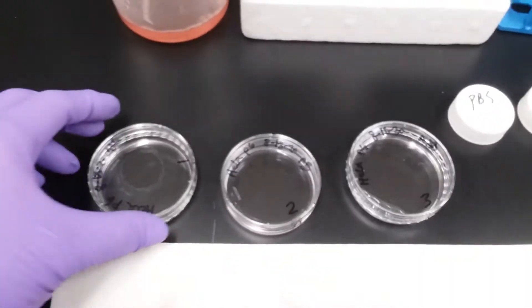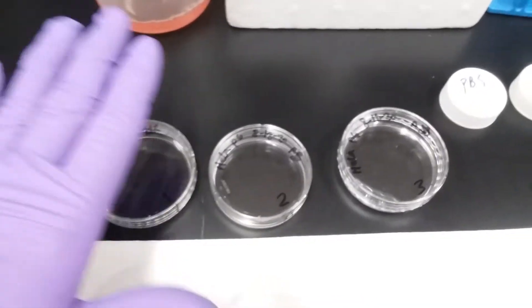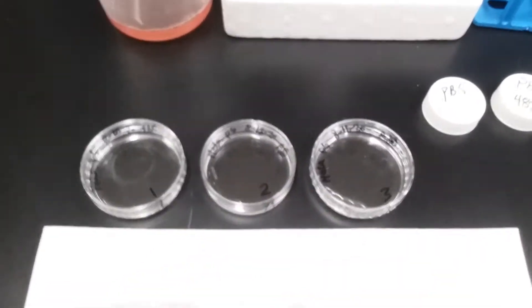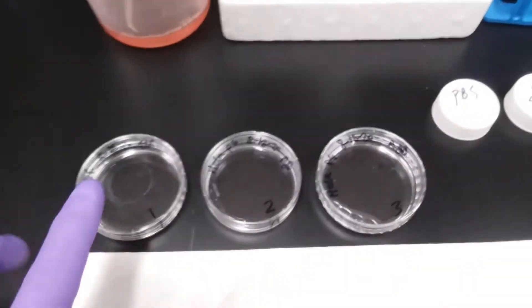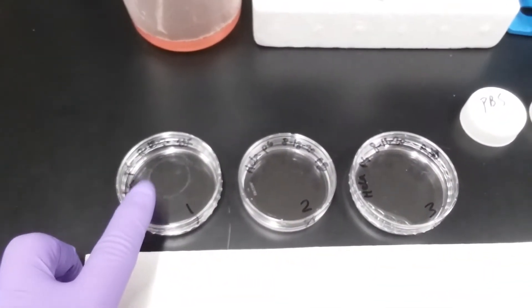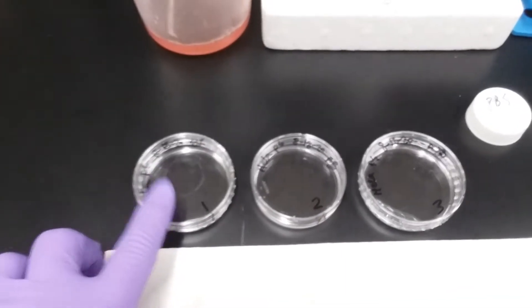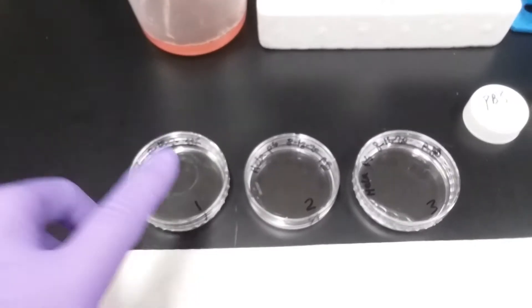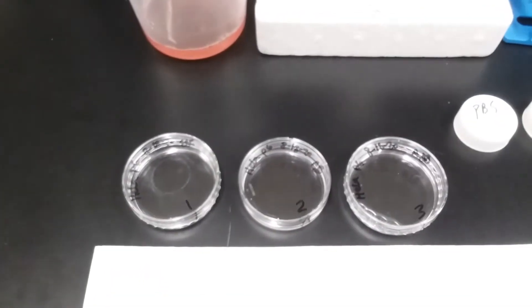So I have 3 dishes. In dish 1, I put PBS, so this is my permeabilization control. It didn't get triton, and dish 2 and 3 did get triton. I do not expect that this control, negative control, will be stained for cytoskeleton because my phalloidin can't get in. I didn't permeabilize the membrane.